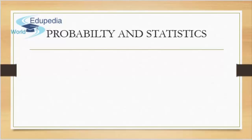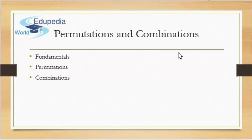However, only simple applications of these concepts will be taught so that you don't get overwhelmed. As you move forward into higher grades, you'll learn more complex concepts related to probability and statistics. In permutations and combinations, we're going to start off with the fundamentals — that is the first thing we're going to do. We'll start with the basics of counting, and we're going to see something called the factorial.